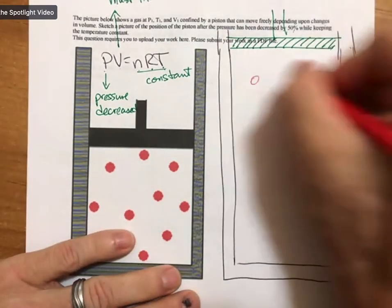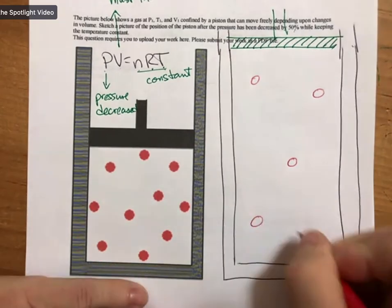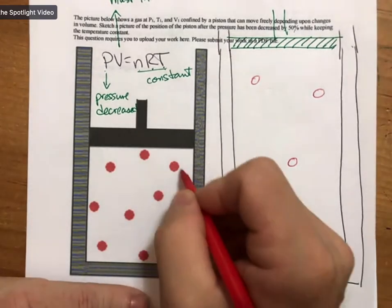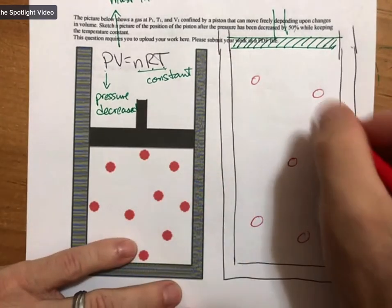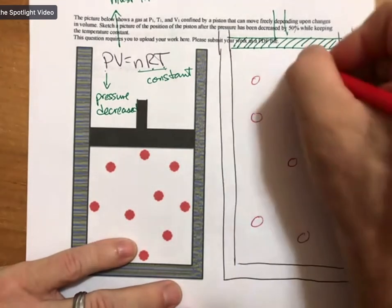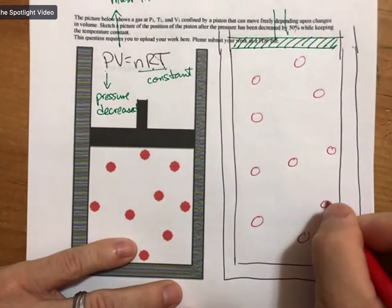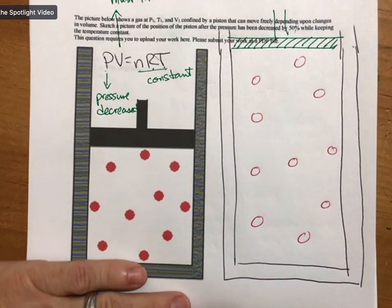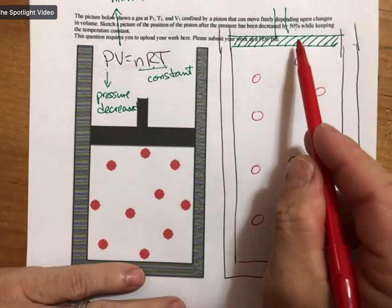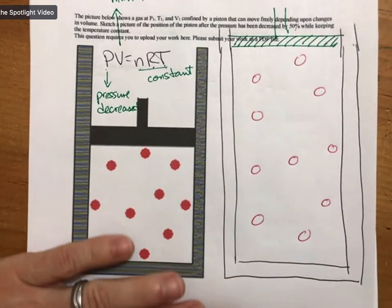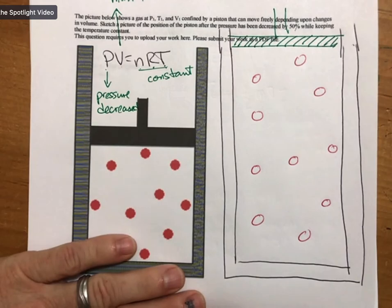You can also draw the gas particles. 1, 2, 3, 4, 5, 6, 7, 8, 9, 10. 1, 2, 3, 4, 5, 6, 7, 8, 9, 10. And that's a fine picture as well. You could also color them in, but I'm not going to color them in.